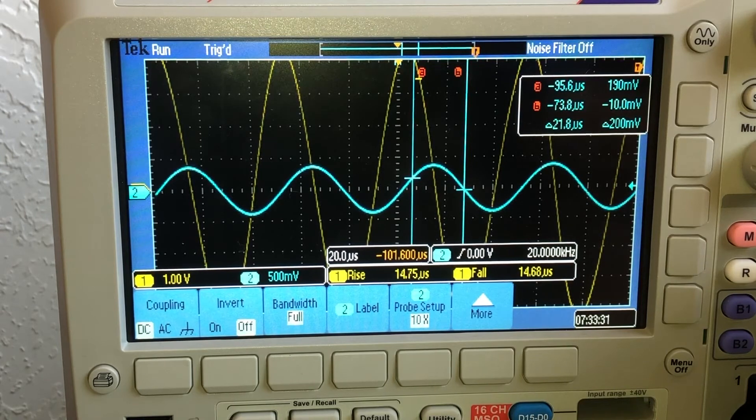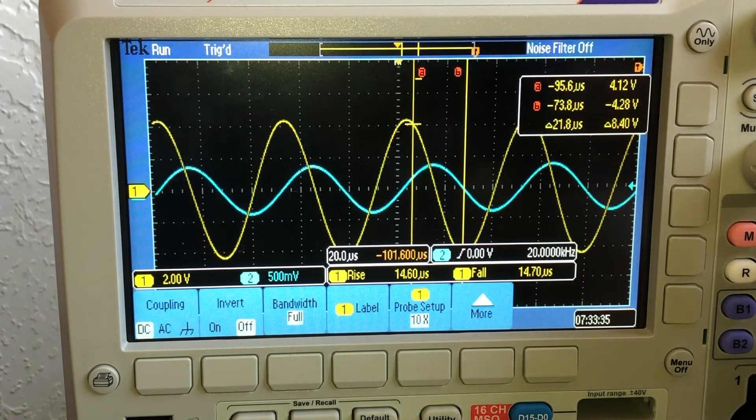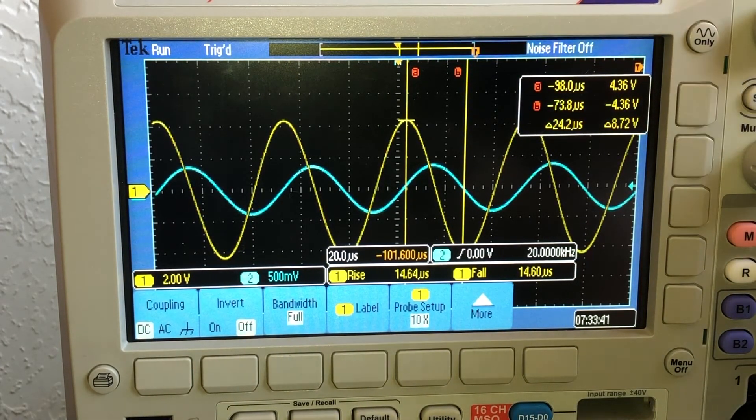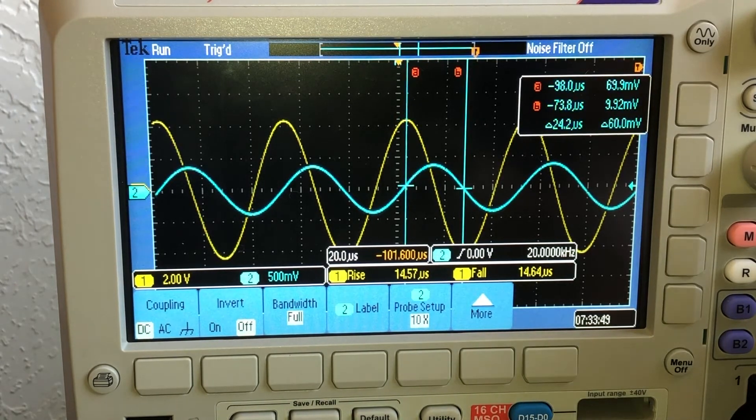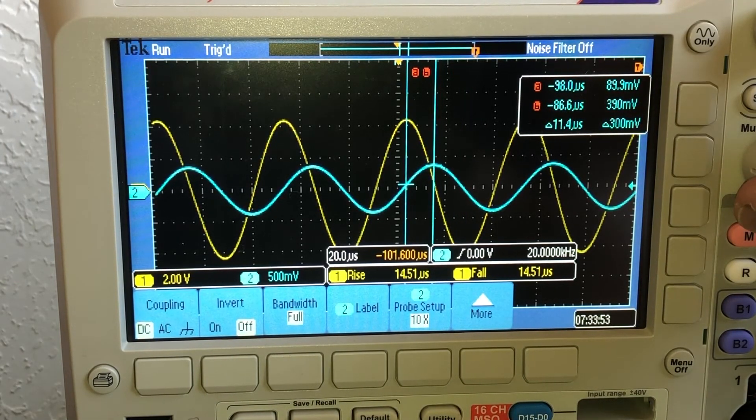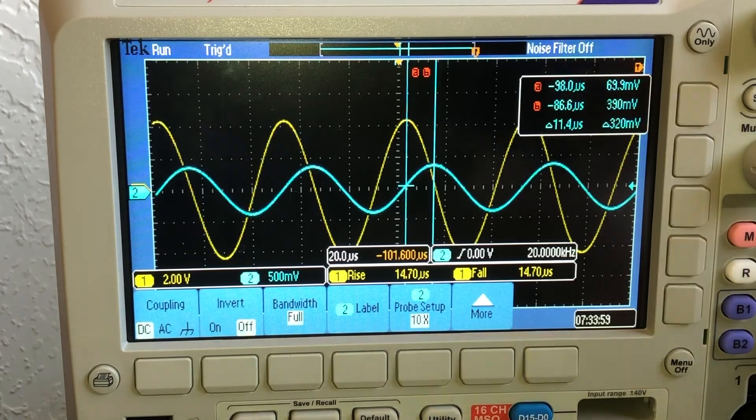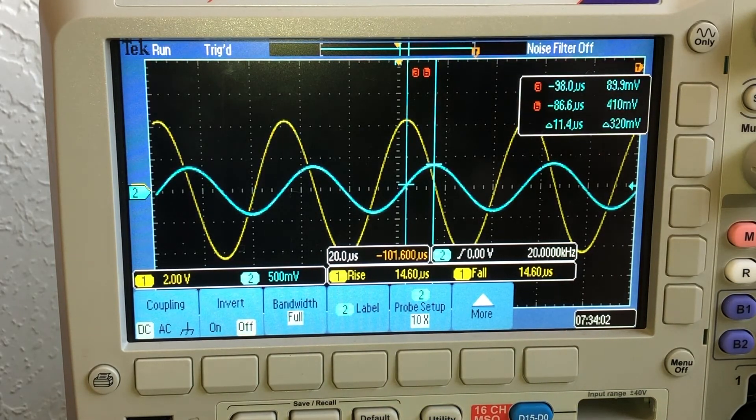Now I'll go up to 20 kHz, and it looks like the peak voltage is up to 4.36 volts, and then on the resistor I have about 400 millivolts.